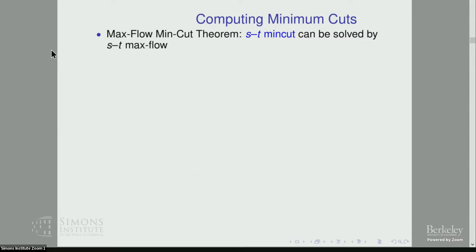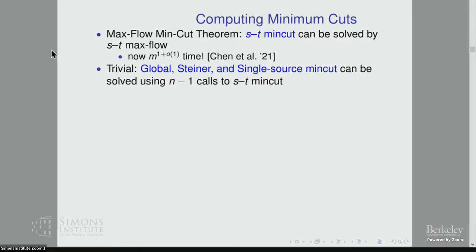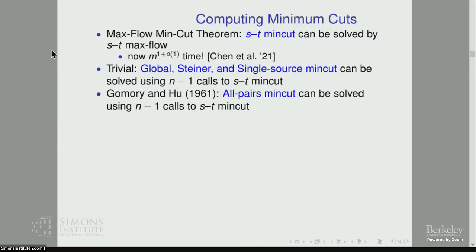This talk is mainly concerned with fast algorithms to solve these problems. One of the most well-known results, the max-flow min cut theorem, shows that the ST min cut problem can be solved by a single ST max flow call. A recent breakthrough by Chen et al. showed this can be done in almost linear time, so almost optimally. The other problems can be reduced to ST min cut: global, Steiner, and single source min cut can be trivially reduced to n minus one calls to ST min cut. Gomory's classic result showed that all pairs min cut can also be reduced to n minus one calls — nontrivial because the naive reduction requires n squared calls.